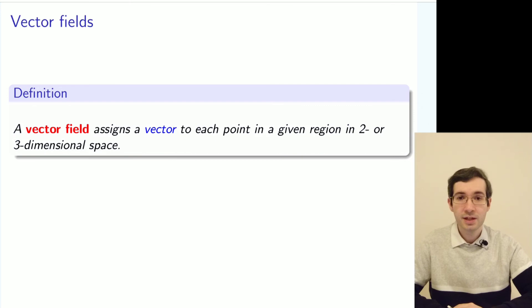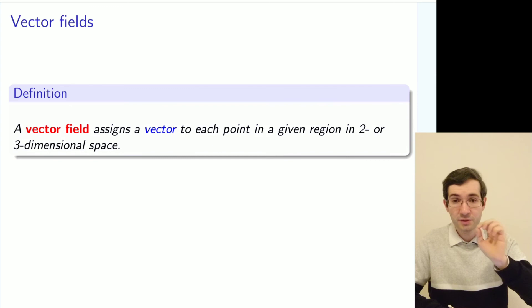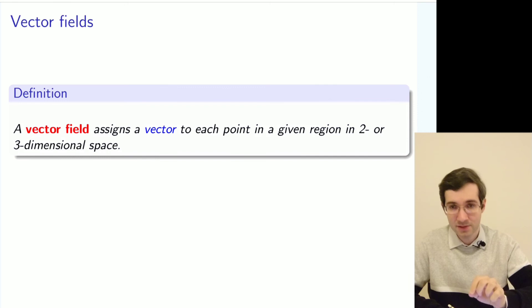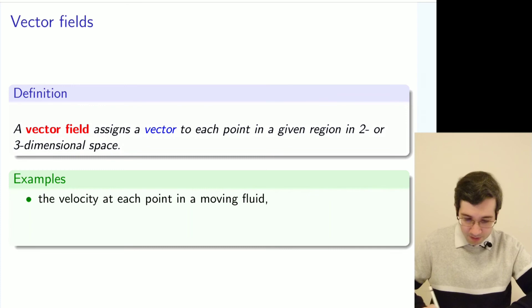But enough about scalar fields. There is a totally new concept, which is a vector field. A vector field is not just a set of values at a given point, but also a set of directions as well as values at every point. To every point of space, be it 2D or 3D, you associate a particular vector, and there can be slightly different vectors in different points.